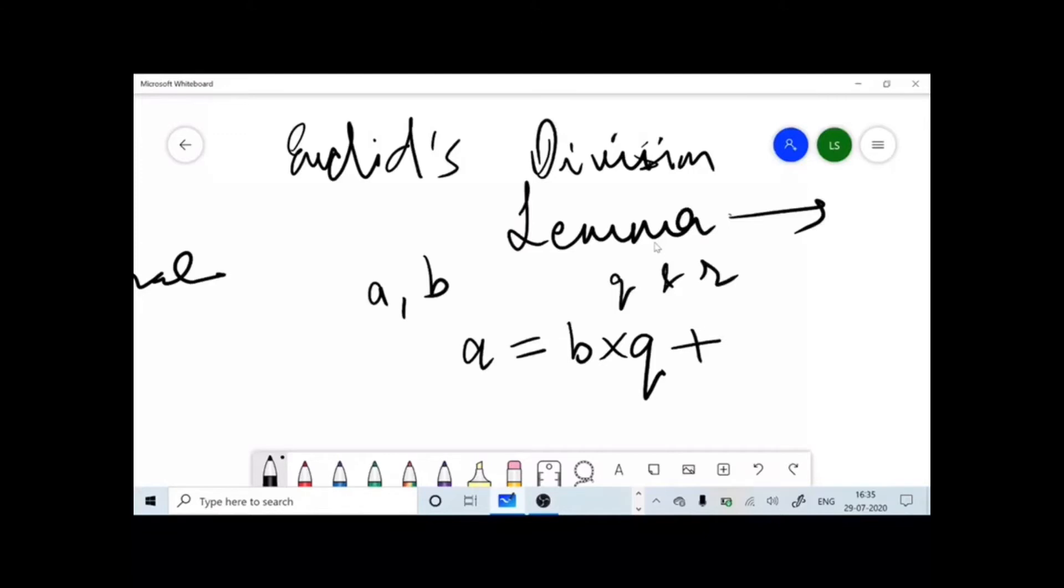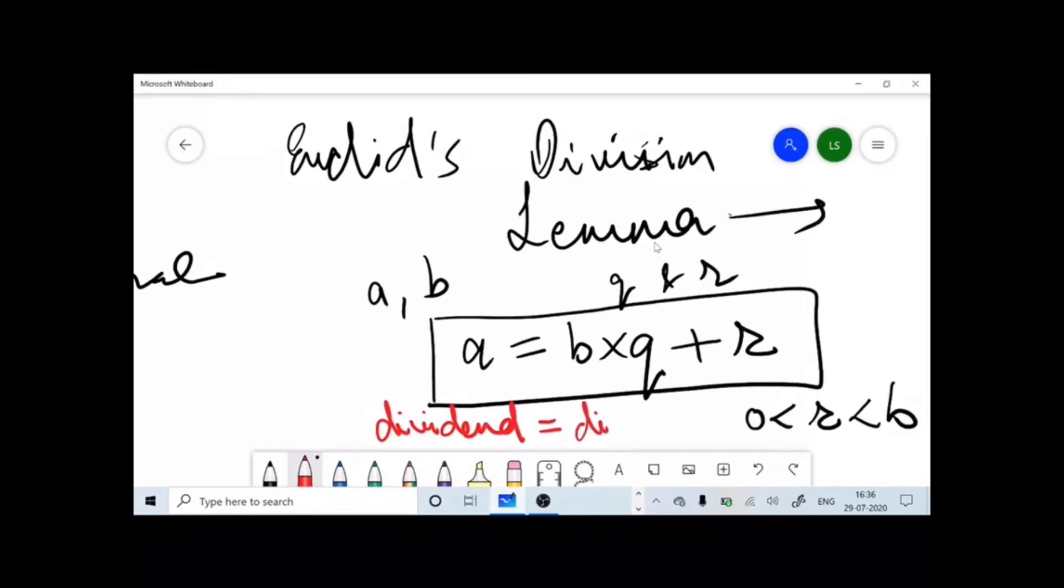Such that, what happens? This is the equation which will be used all the time: a = bq + r. Now you have to be very careful. This r which we are talking about has to be greater than zero but less than b. Then only this condition will appear.